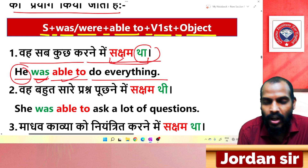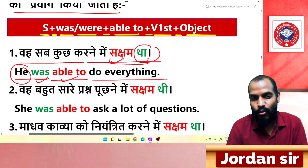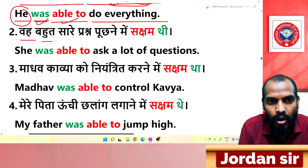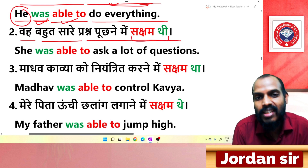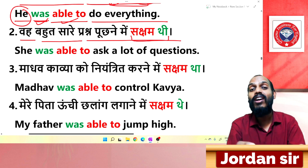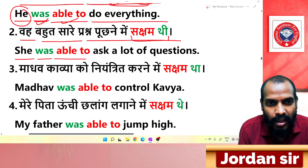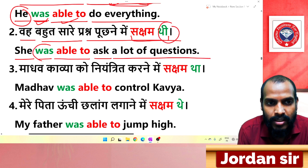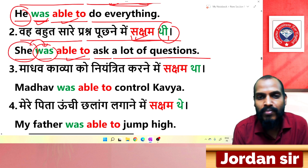Next: 'वह सक्षम थी' — from 'थी' we get 'was', and from 'सक्षम' we get 'able to'. Translation: 'She was able to ask a lot of questions.' Since 'she' is a singular subject, we use 'was'.